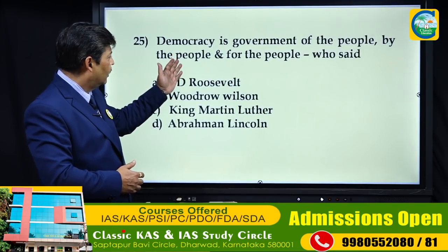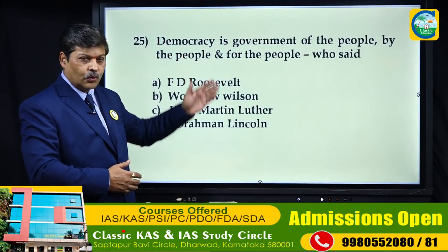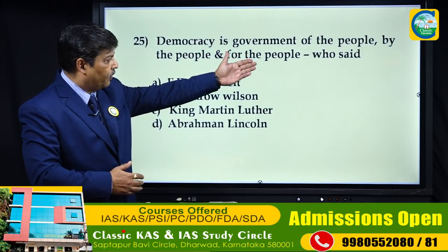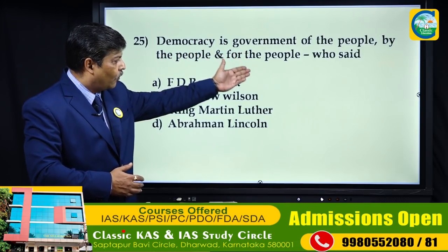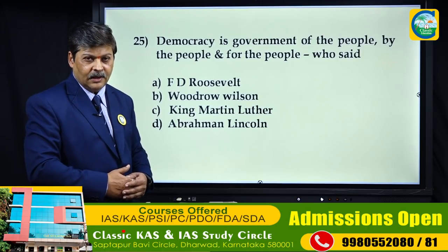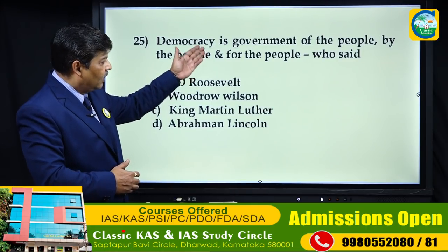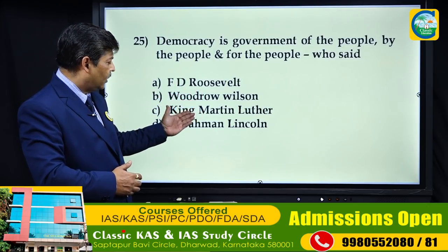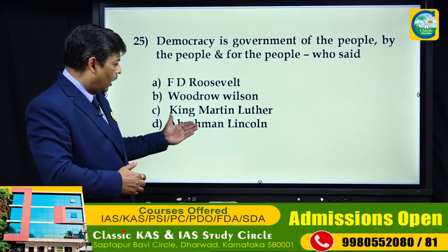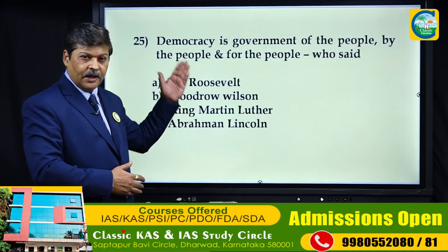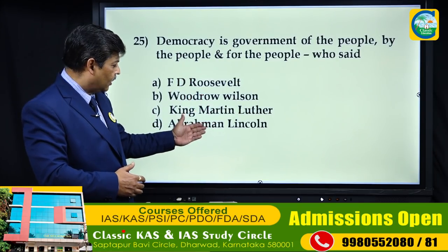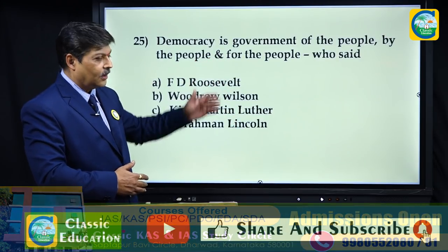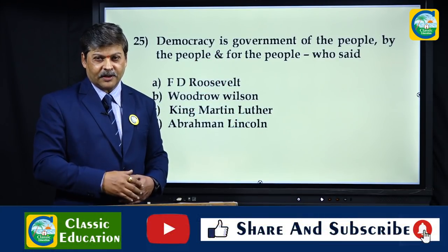The last question: 'Democracy is government of the people, by the people, and for the people' — who said this? Options are F.D. Roosevelt, Woodrow Wilson, Martin Luther King, and Abraham Lincoln. This is taken as the best definition of democracy and was said by Abraham Lincoln.